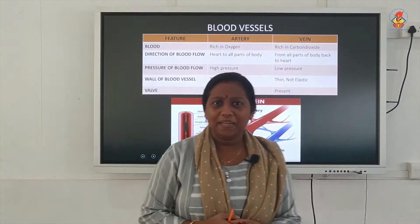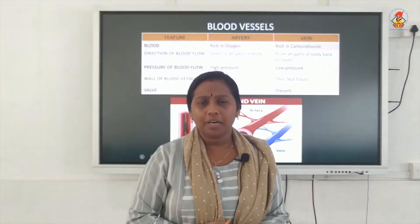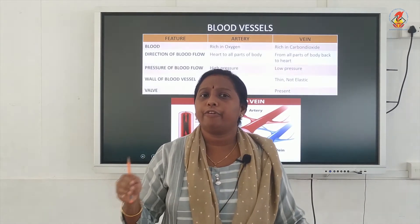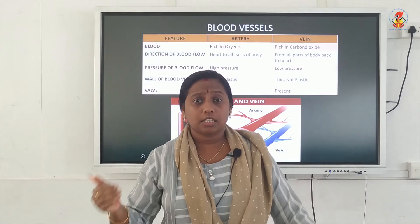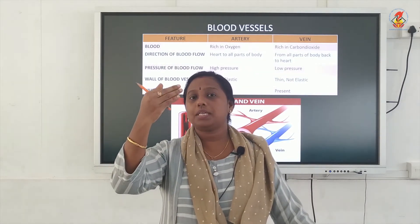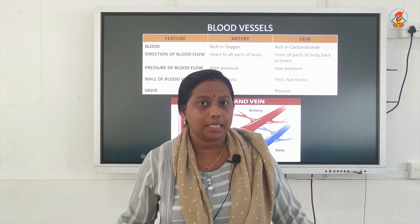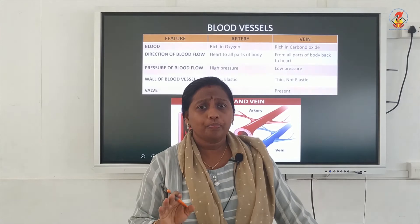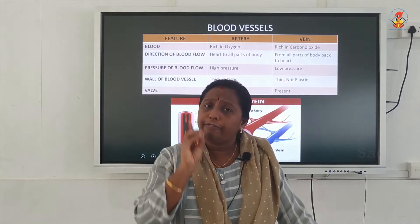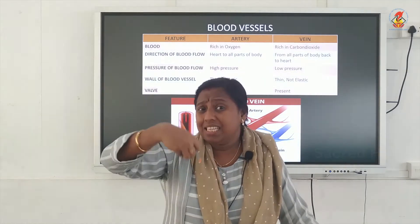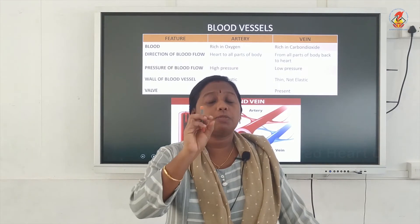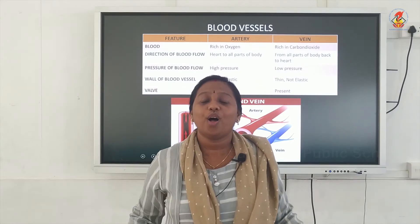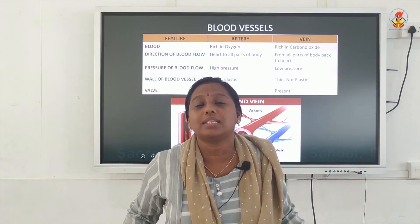With that, the composition of blood is complete. Remember: blood has a fluid part called plasma and a solid part called blood cells — RBCs, WBCs, and platelets are the different blood cells. Now, blood is a fluid which flows inside our body through special channels. The channels through which blood flows are called blood vessels.